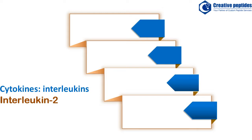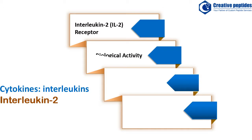The interleukins represent another large family of cytokines, with at least 25 different constituent members having been characterized thus far. Most of the interleukins are produced by a number of different cell types. Here, we introduce one of the important interleukins: interleukin-2. Contents include the interleukin-2 receptor, biological activity, cancer treatment, infectious diseases, and inhibition of interleukin-2 activity.